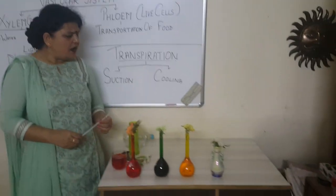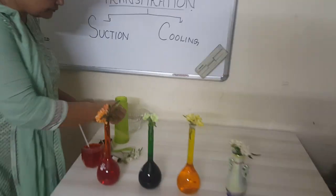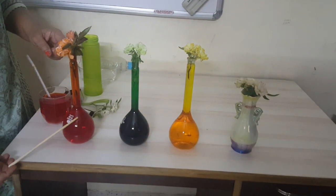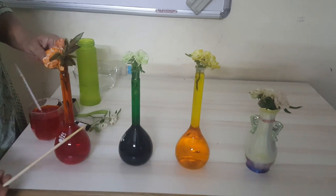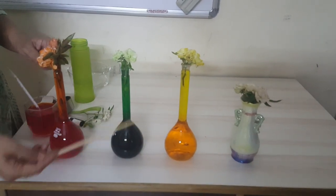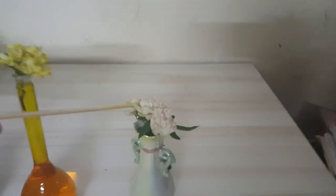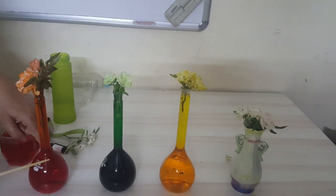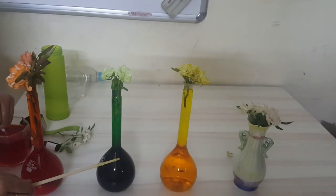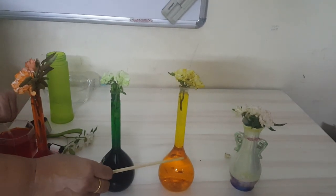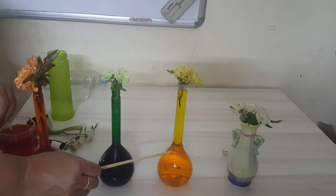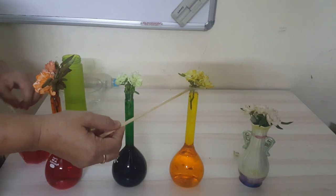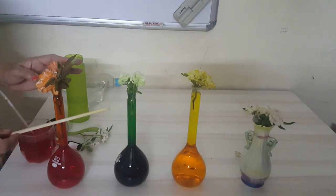I have an experiment for you. I picked up three flasks and took food colors — red, green, and yellow. I took water and white roses. In the first flask I mixed red color in water, in the second flask I mixed green color, and in the third one I mixed yellow color. Then I placed a white rose in each flask and left this arrangement for at least two hours.